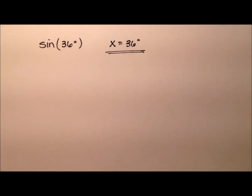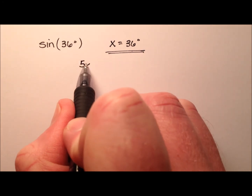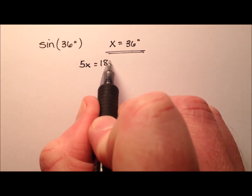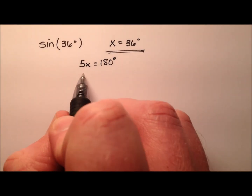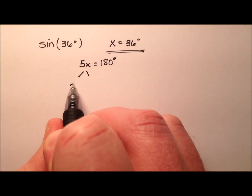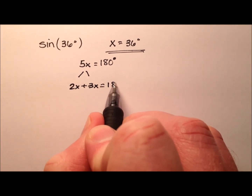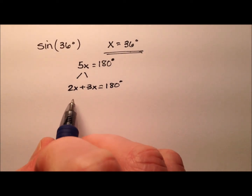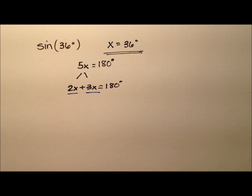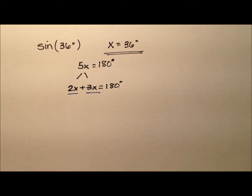Anytime we see an x, we know that represents 36 degrees. I'm going to continue by saying that 5x equals 180 degrees, because 5 times 36 degrees is 180 degrees. I'm going to break this down into 2x plus 3x equals 180 degrees. What this means is I have two angles, 2x and 3x, and they're supplementary angles because they add up to 180 degrees.